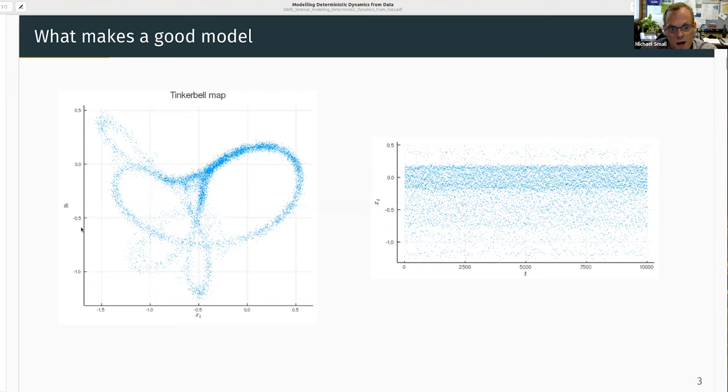And that gives me a fuzzy approximation to the deterministic Tinkerbell map. So on the left I'm plotting the states XT versus YT. On the right I'm plotting the time series of just XT. So what I'm seeking to do when I build a model is simply by measuring the XTs, build some model which approximates both XT and YT.